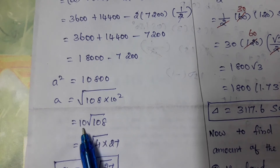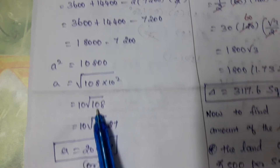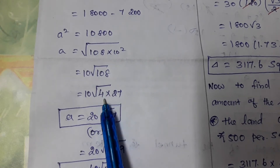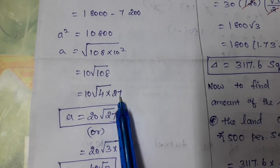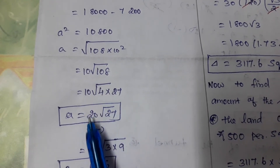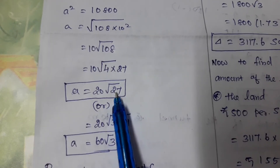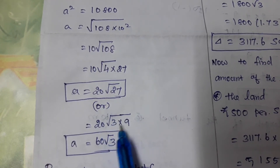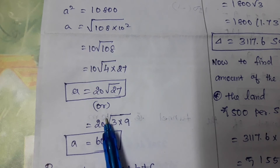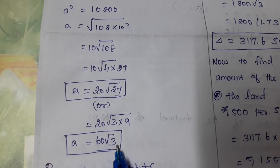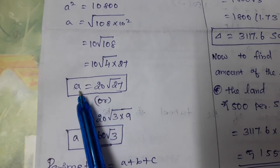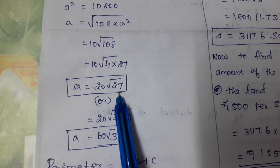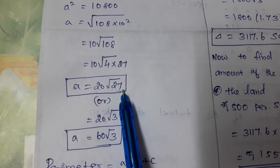Simplifying: A² = 10800 = 108 × 100, so A = 10√108 = 10 × √(4×27) = 10 × 2√27 = 20√27. Since √27 = 3√3, we get A = 60√3 feet.